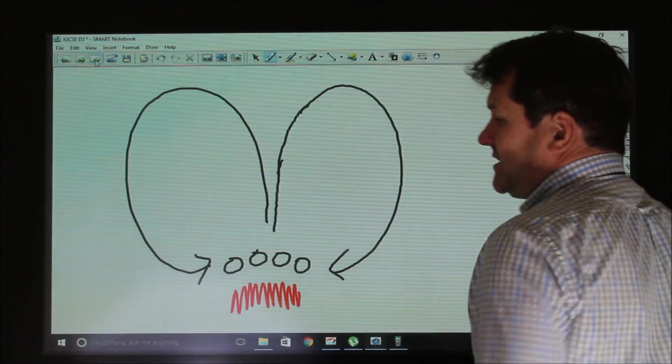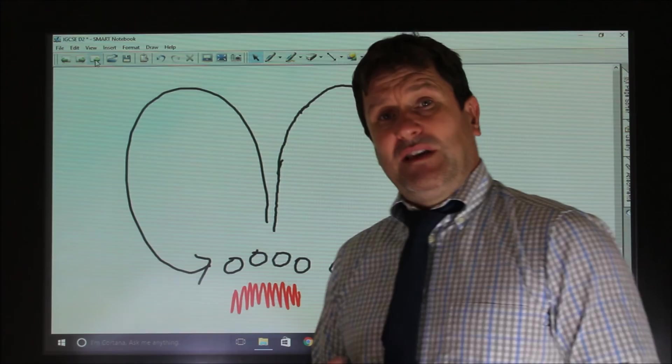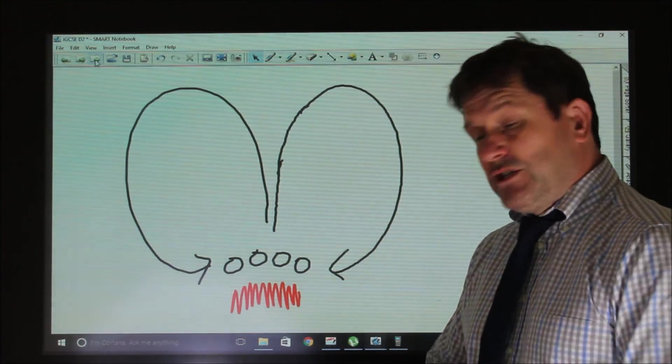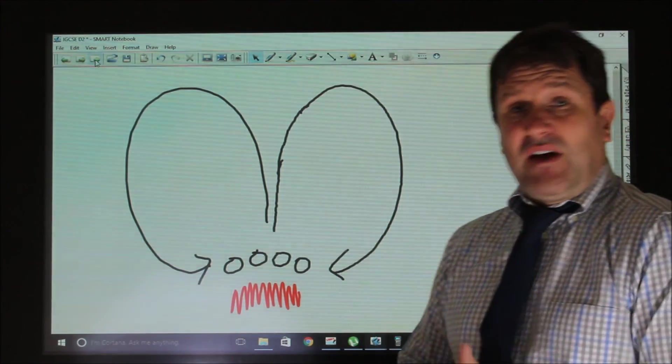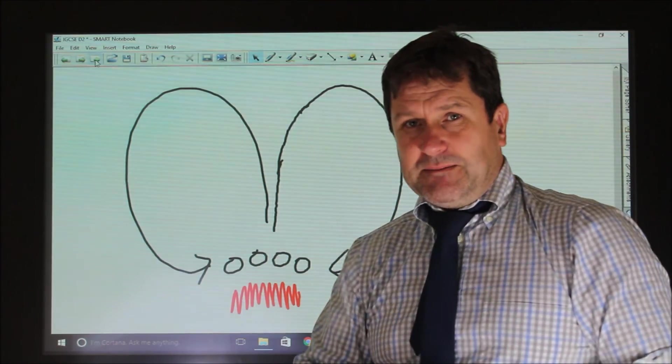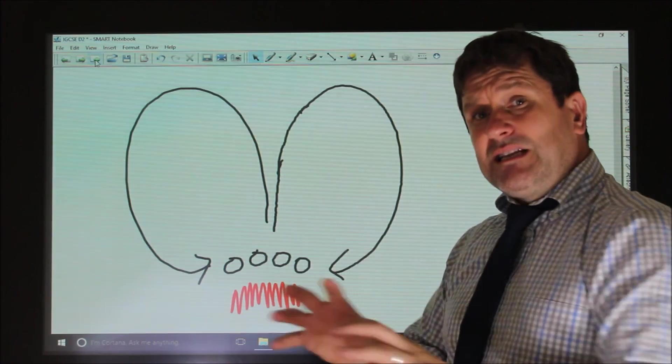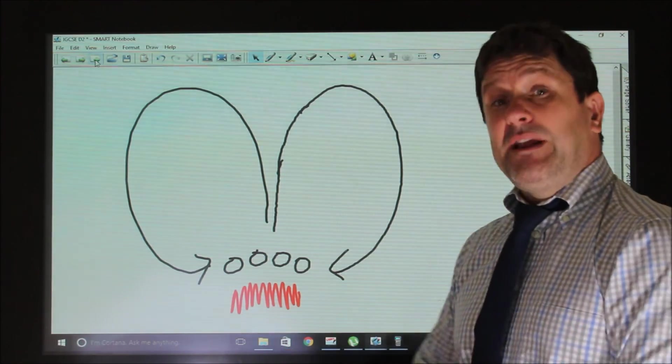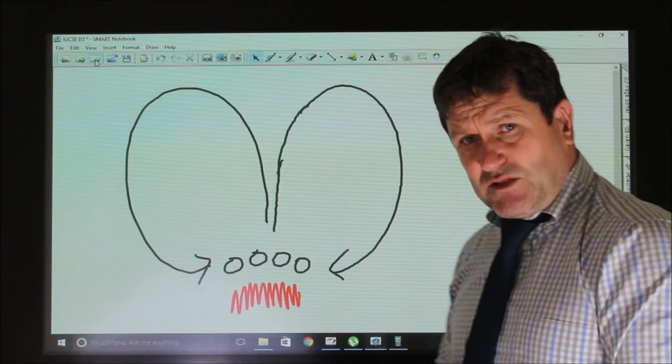Convection currents happen wherever you've got hot air or hot liquids. If you boil a pan of water or turn a fire on in a house, you will get convection currents all around it. In gases and liquids where the particles are free to move, you will get convection currents set up.